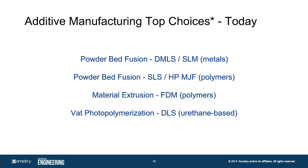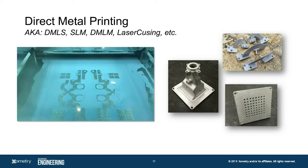Today I'll cover a few top technology choices: powder bed fusion metals — often called Direct Metal Laser Sintering (DMLS) or Selective Laser Melting (SLM); powder bed fusion polymers — Selective Laser Sintering (SLS) and Multi Jet Fusion (MJF); material extrusion — Fused Deposition Modeling (FDM); and photopolymerization — including Digital Light Synthesis (DLS) and stereolithography (SLA).